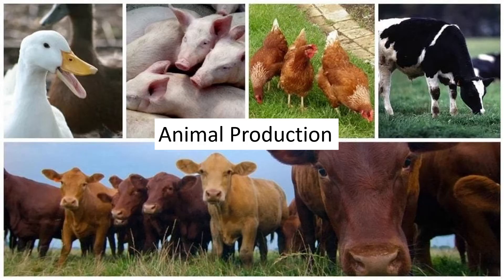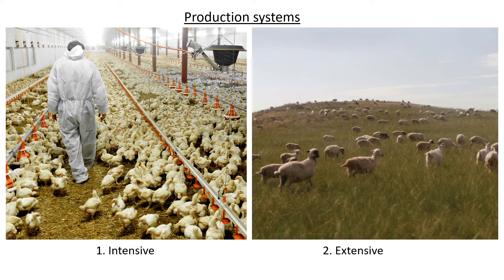There are two main types of production systems: the first is intensive and the second is extensive. As the pictures show, intensive production means the animals are usually contained inside a building or housing system of some kind, where as many animals as possible are produced, allowed to grow, and fed.